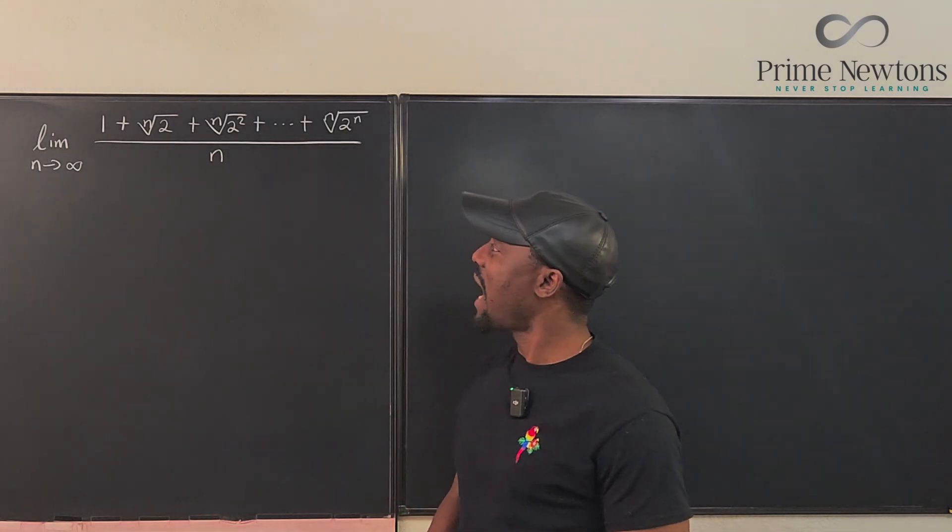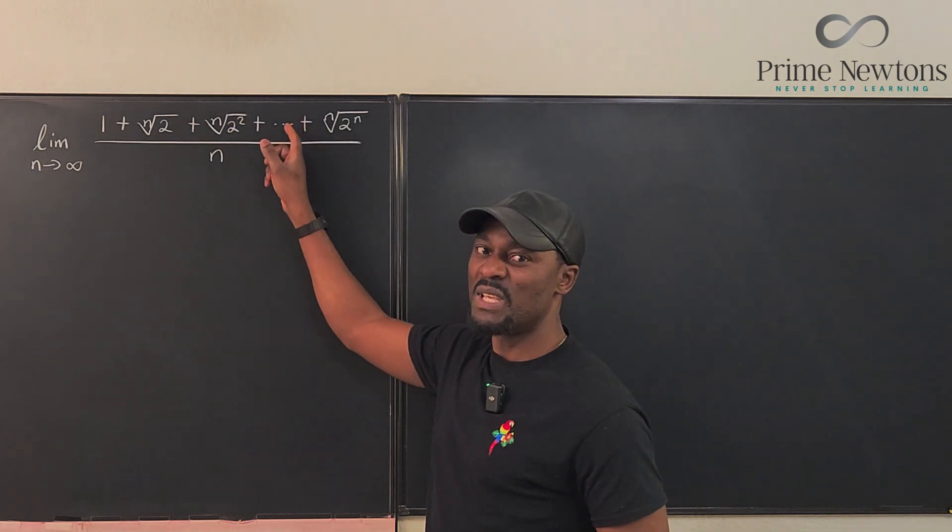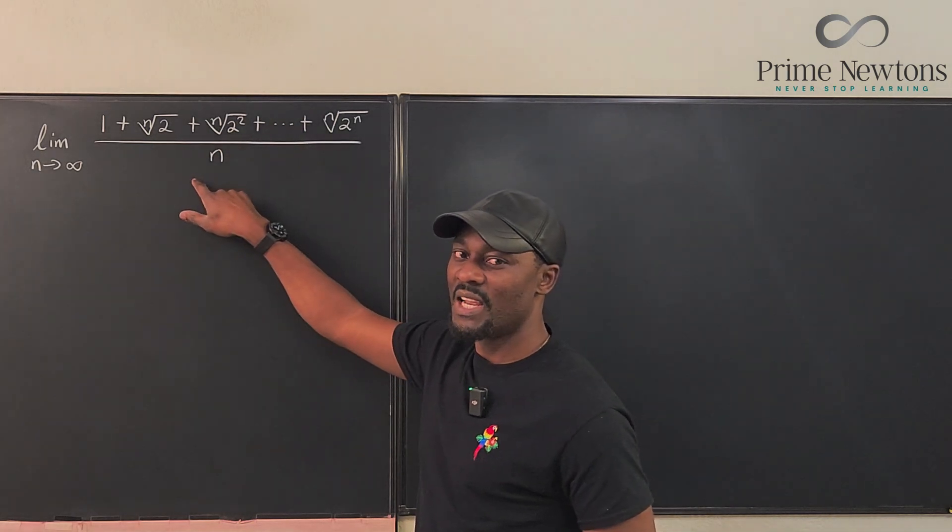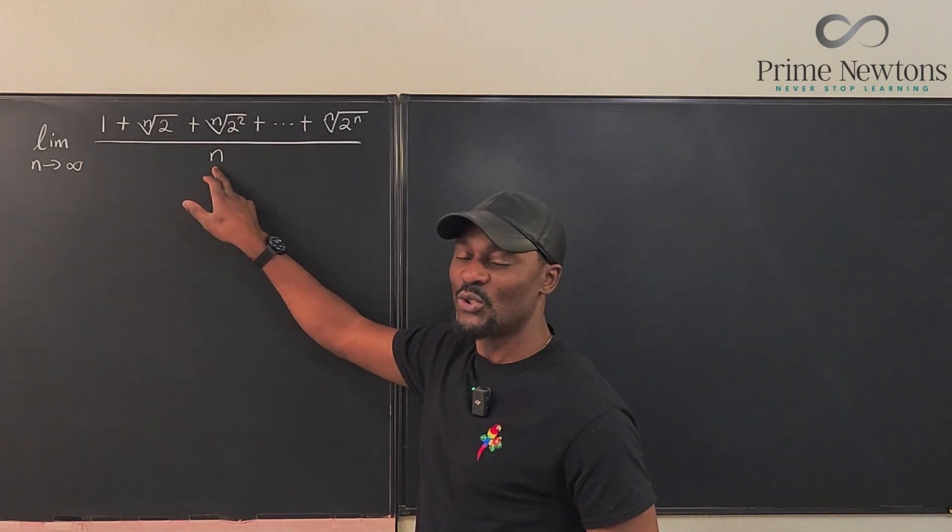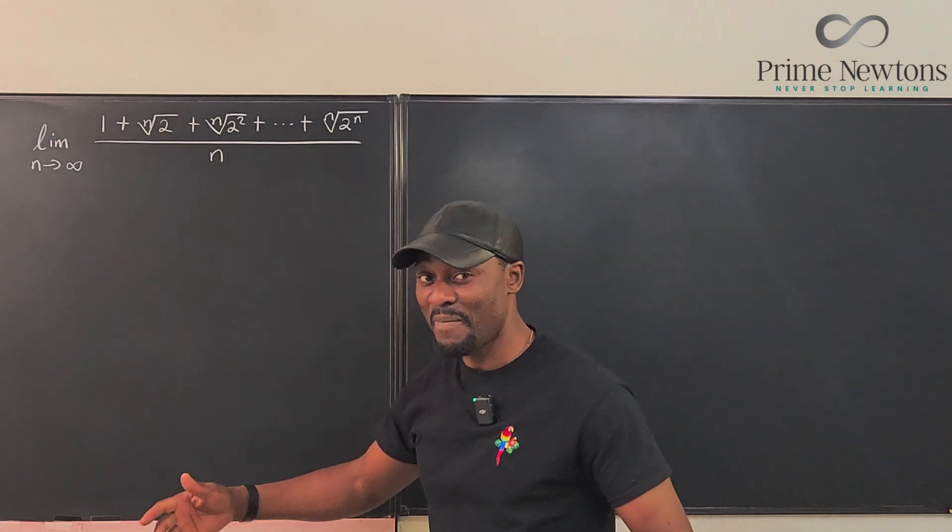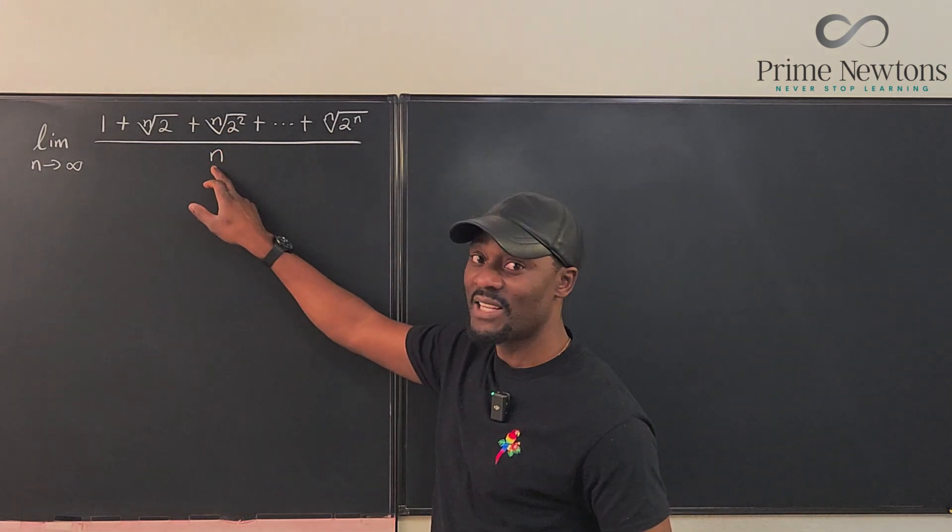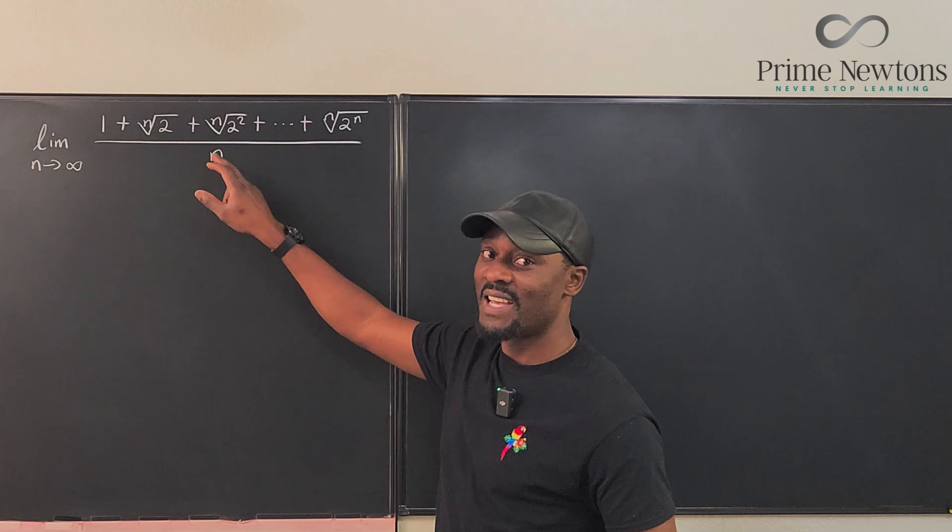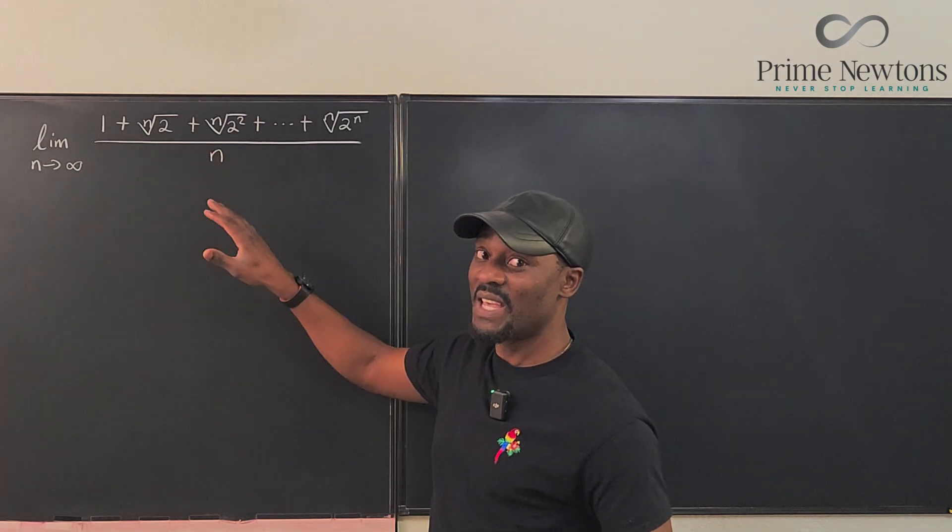As n goes to infinity, I know the numbers on top would be less than n. So it's more likely to converge, right? And because it's less than n and n is going to infinity, I should be getting zero, right?